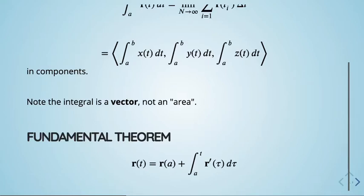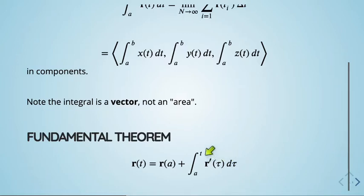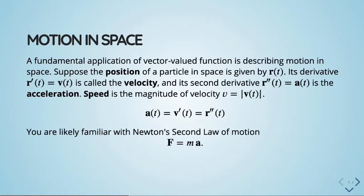The good news: the fundamental theorem looks exactly the same. A vector-valued function can be given by one value of the function — r(a) — plus an integral of the change: r(t) = r(a) + ∫ₐᵗ r′(τ) dτ. I use tau as a dummy variable since I need something other than t. That's how I like to write the fundamental theorem.